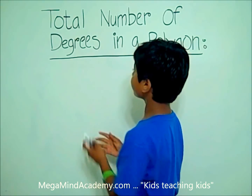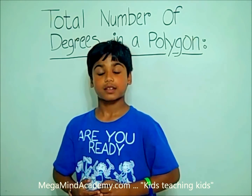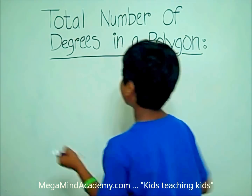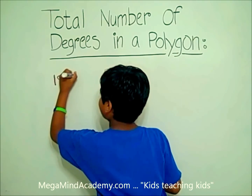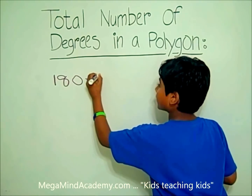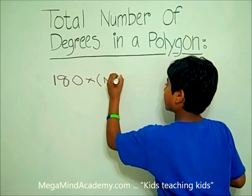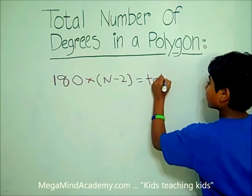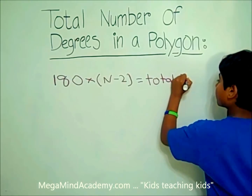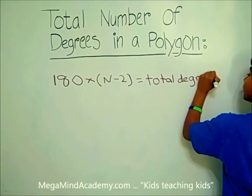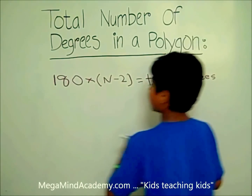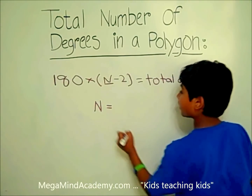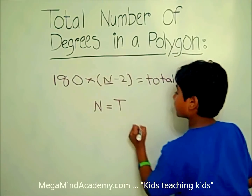How do we find the total number of degrees inside those shapes? There is an easy formula: 180 times (n minus 2) equals the total number of degrees, where n equals the number of sides the polygon has.